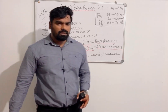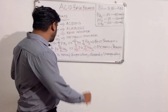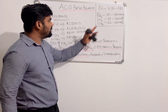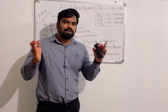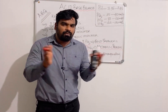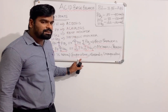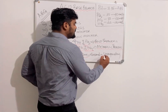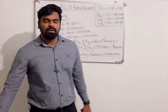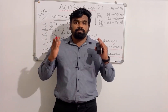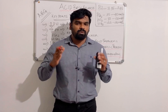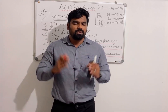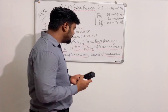If pH is normal — ranging between 7.35 to 7.45 — it is compensatory. If pH is abnormal, it is uncompensatory. These are the key points you need to remember to solve any ABG question.